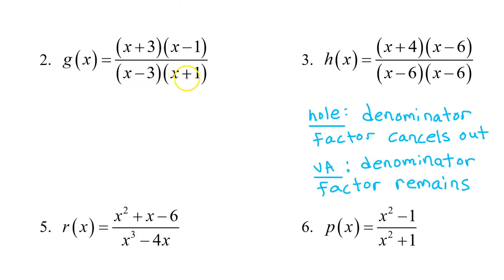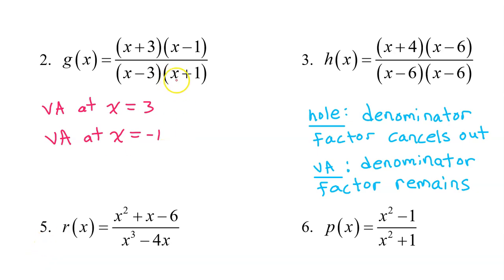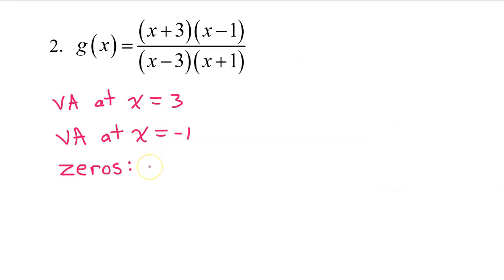Number 2: focus on the denominator. The factor of x minus 3 does not cancel out with anything, so this will give us a vertical asymptote at x equals 3. We have a factor of x plus 1 in the denominator that doesn't cancel out either, so we have a vertical asymptote at x equals negative 1. Also, g(x) will have a zero at negative 3 because x plus 3 is only in the numerator, and a zero at positive 1 because x minus 1 is only in the numerator.